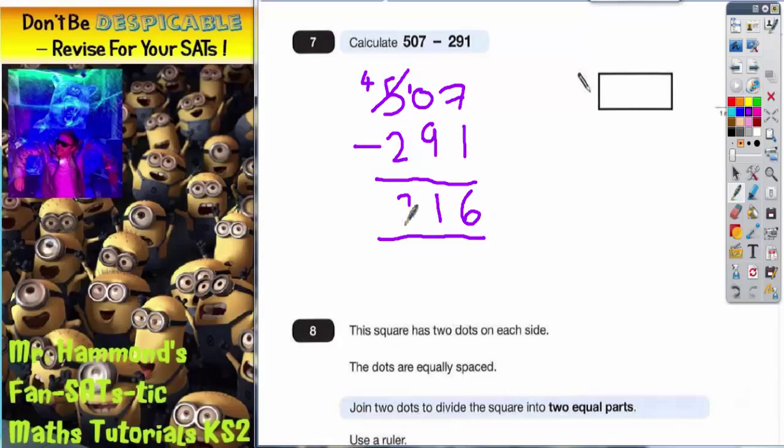So your final answer is 216. So that's what needs to get written in the answer box.